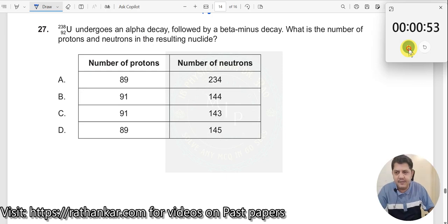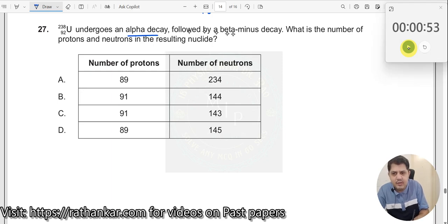Question number 27. Uranium-92 undergoes an alpha decay followed by a beta decay. There are two decays happening here.